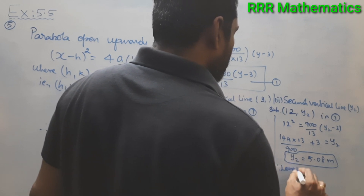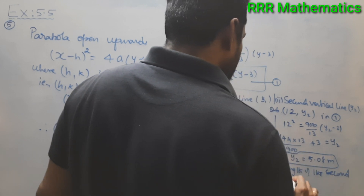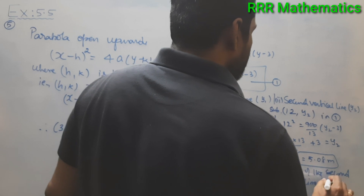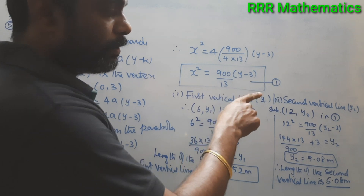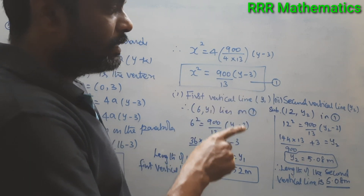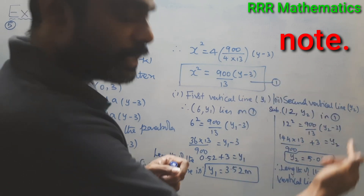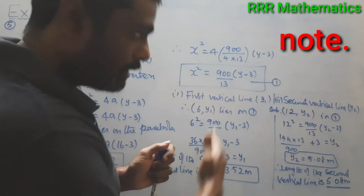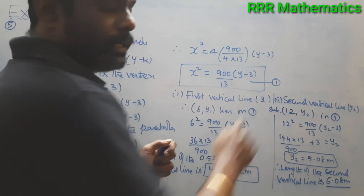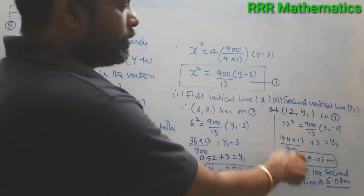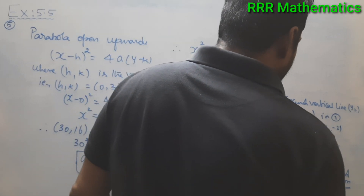Therefore, the length of the second vertical line is 5.08 meters. The second vertical line is 12 meters away from the vertex — 6 meters from the vertex to the first cable, and another 6 meters to the second cable. The horizontal distance is 12 meters, and substituting gives y₂ = 5.08 meters.